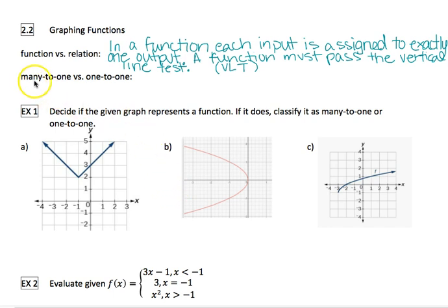Once it's a function, then we have these two categories. Many-to-one passes the vertical line test, but fails the horizontal line test. The horizontal line test is basically testing to see whether the inverse of the given function would also be a function. So a many-to-one function passes the vertical line test but fails the horizontal line test. A one-to-one function passes both the horizontal line test and vertical line test.